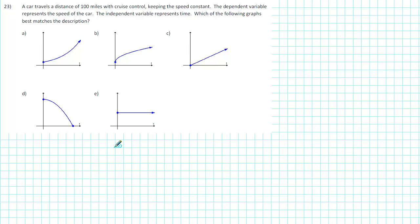A car travels a distance of 100 miles with cruise control, keeping the speed constant. The dependent variable represents the speed of the car. The independent variable represents time. Which of the following graphs best matches the description?